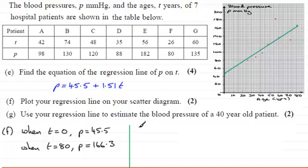All we've got to do is say that when t equals 40, then substituting that into our equation, p will equal 45.5 plus 1.51 multiplied by 40. And the result we get is 105.9.